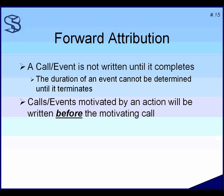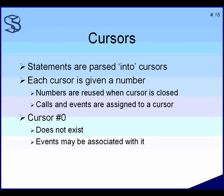Statements are parsed into a cursor, which is just a pointer to a region of memory. Each cursor is given a number, making it easy to look at wait events, parses, executes, and fetches and associate them with a particular statement. Numbers are reused when a cursor is closed — for example, there may be multiple cursor number sevens as that number gets reused after each close.